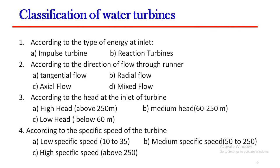Next comes the classification of water turbines. It has been classified according to four types. Number one, according to the type of energy at inlet: impulse turbine and reaction turbines. Number two, according to the direction of flow through runner: tangential flow, radial flow, axial flow, and mixed flow.